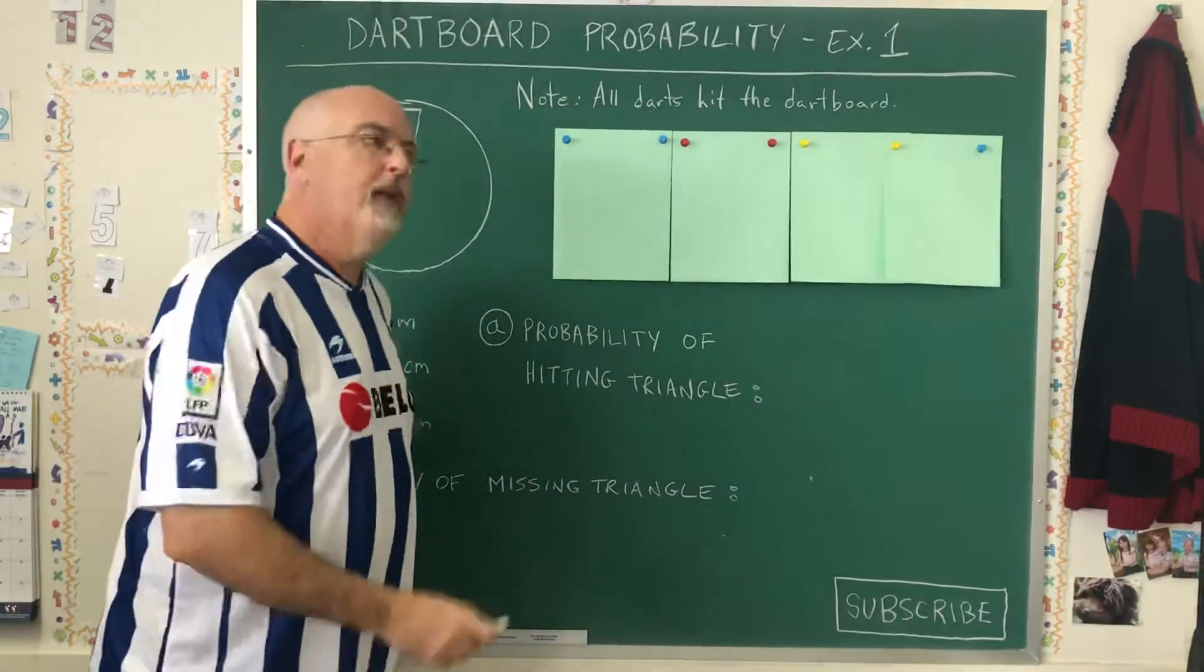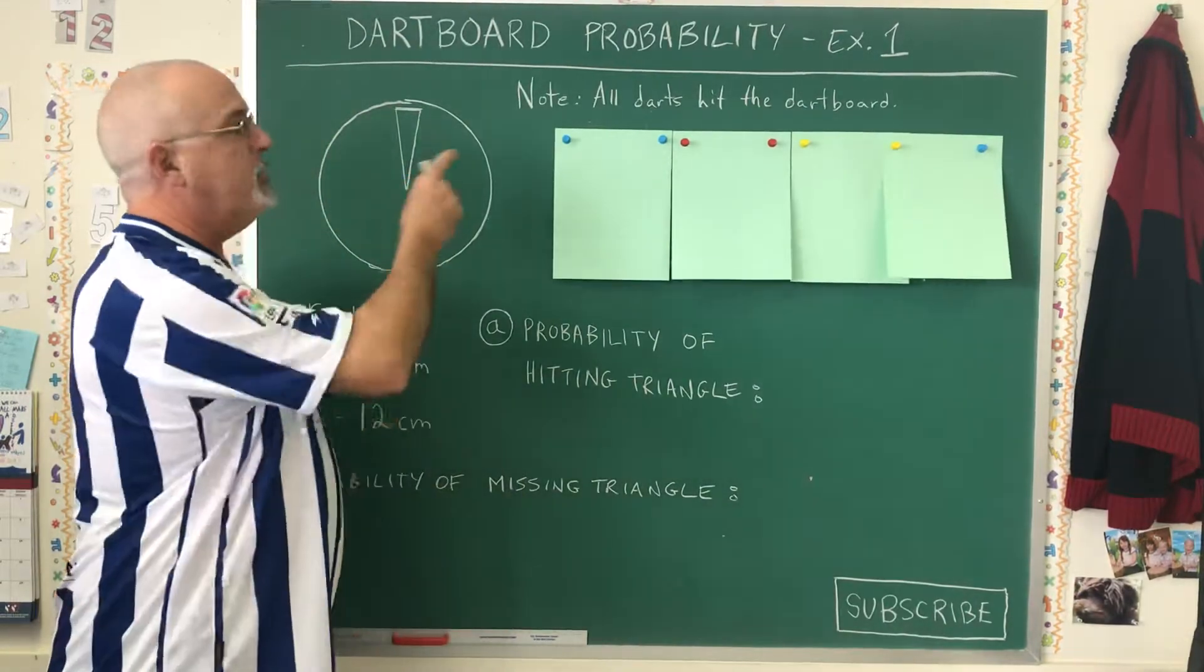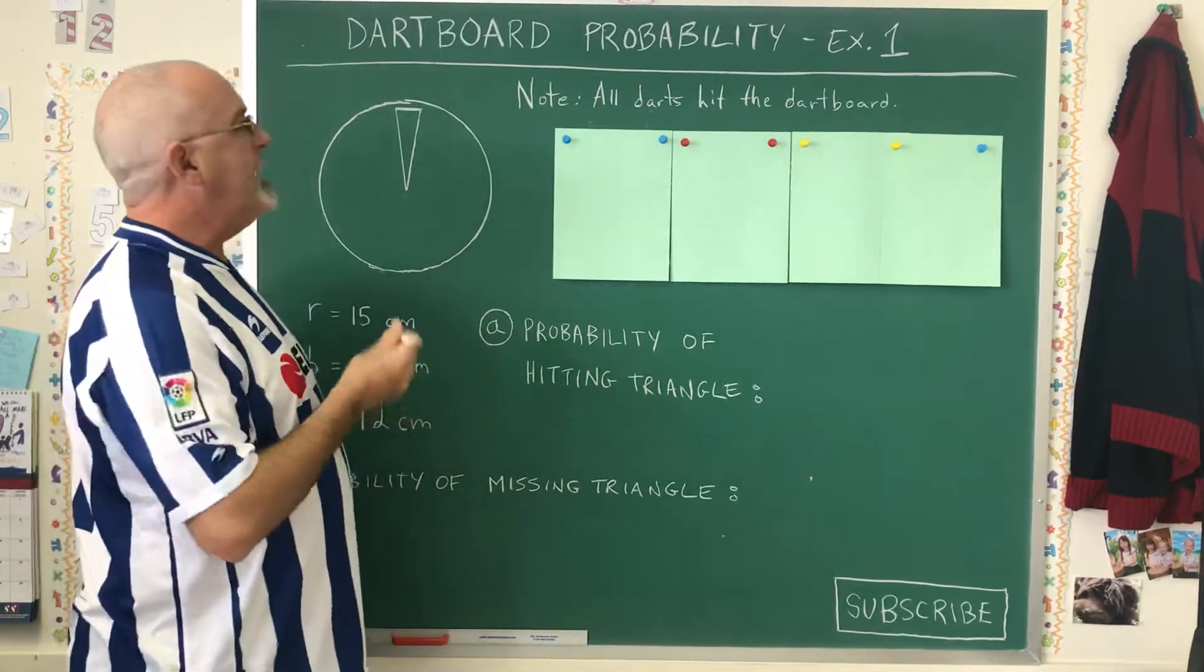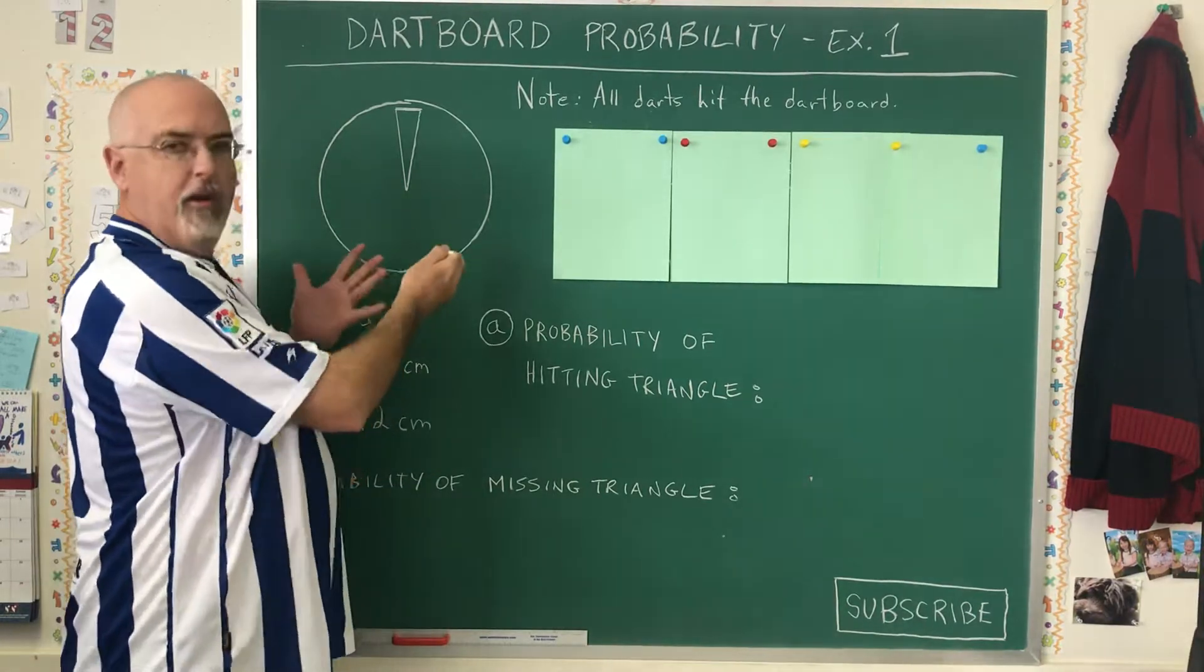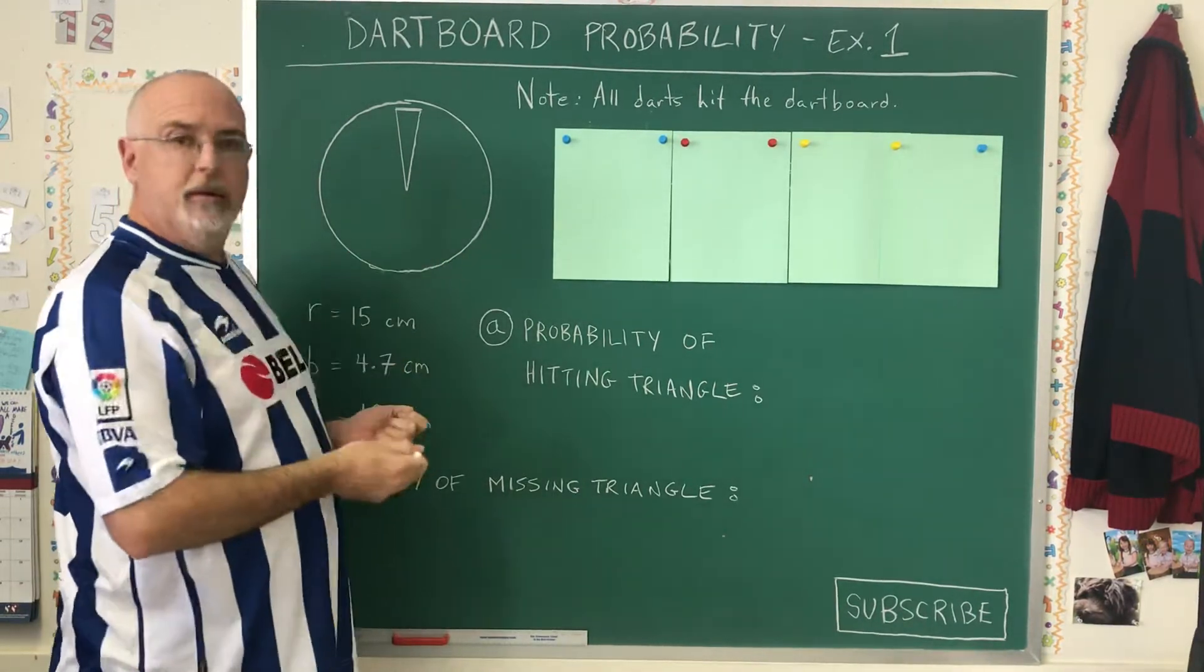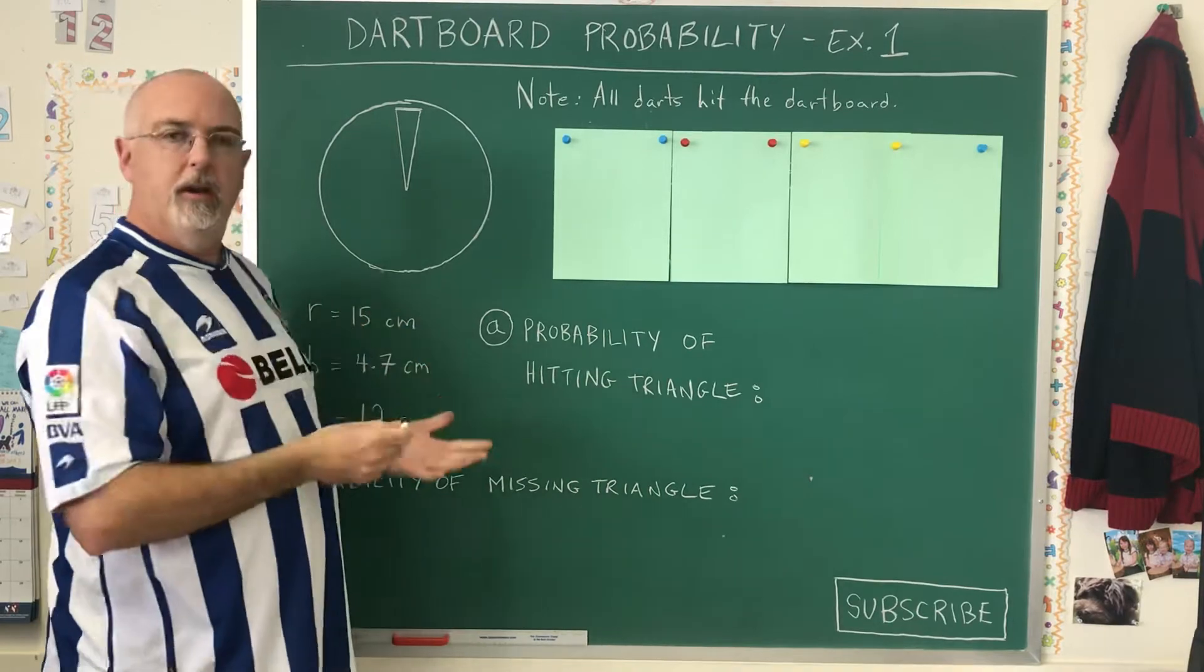In today's Daily Dose of Math, we're looking at dartboard probability, which is a name I give to a type of probability problem where you're using the areas of certain common shapes to get the numbers you need to make the calculation.